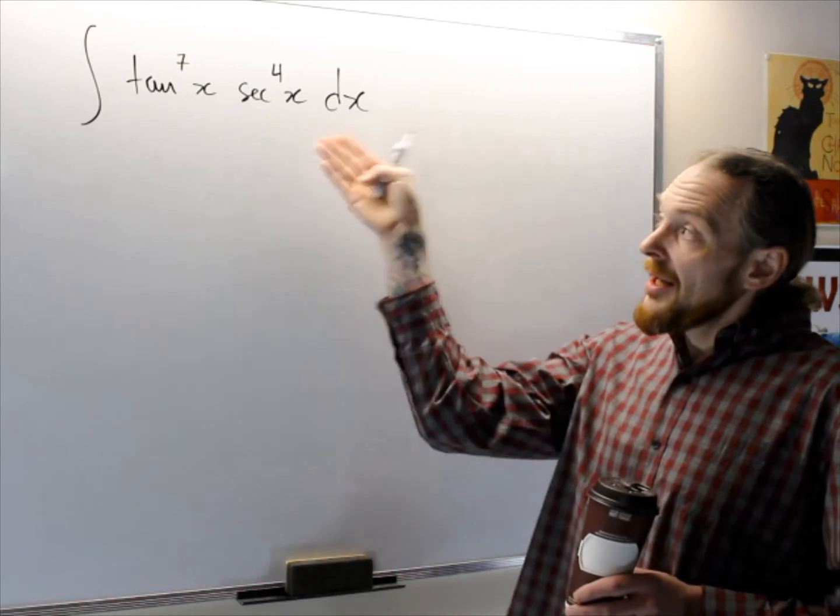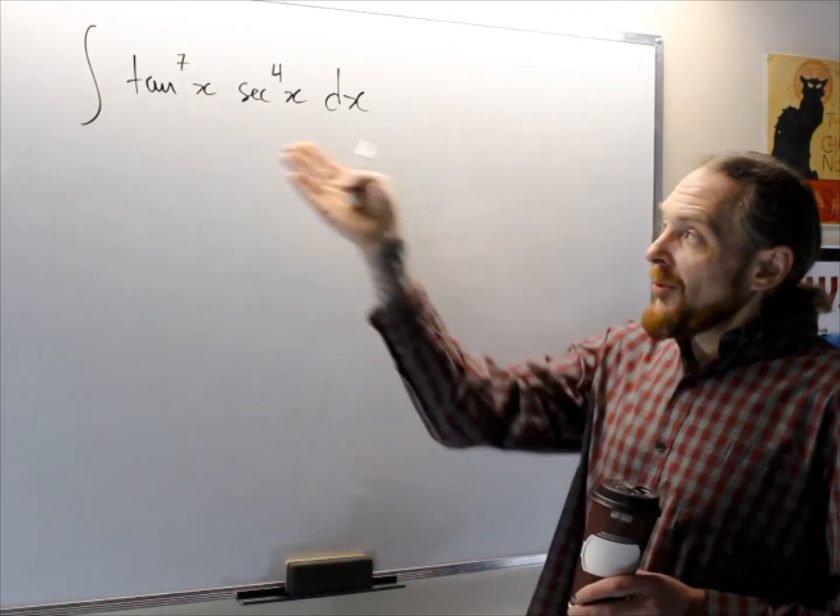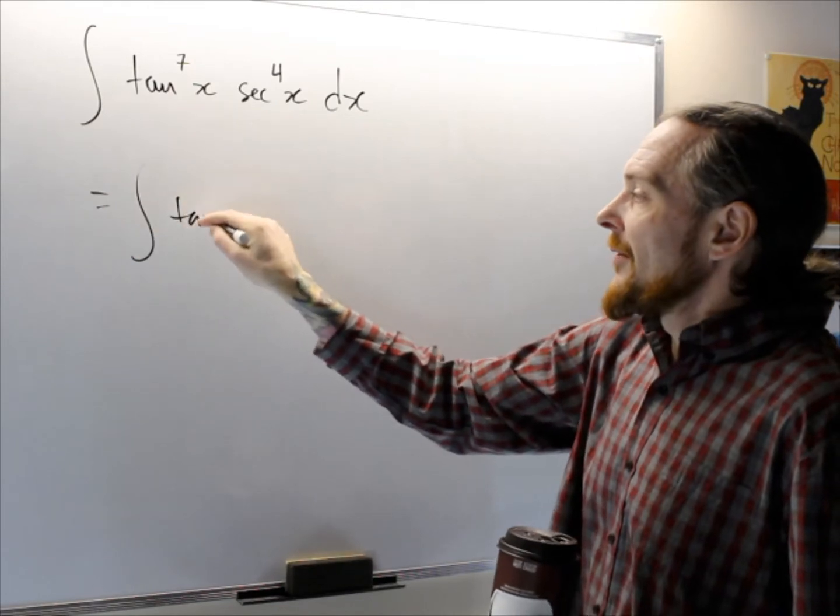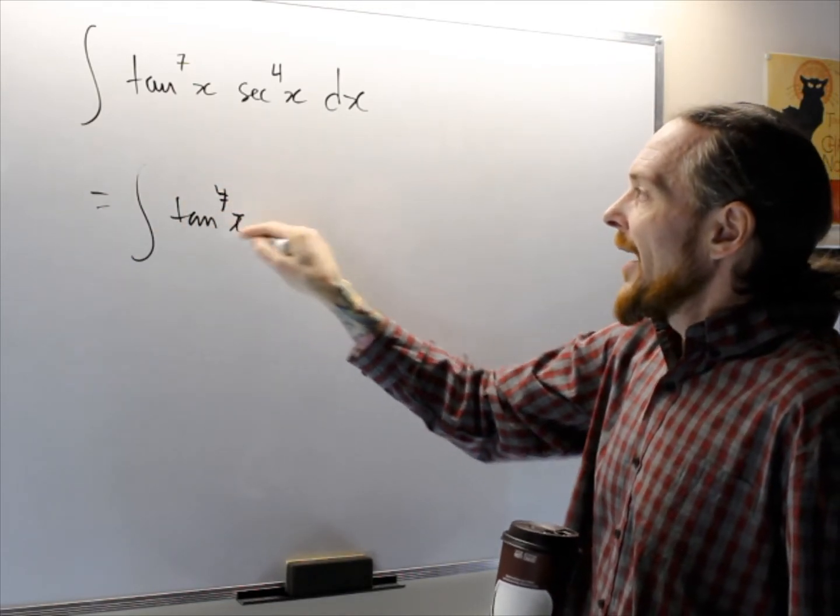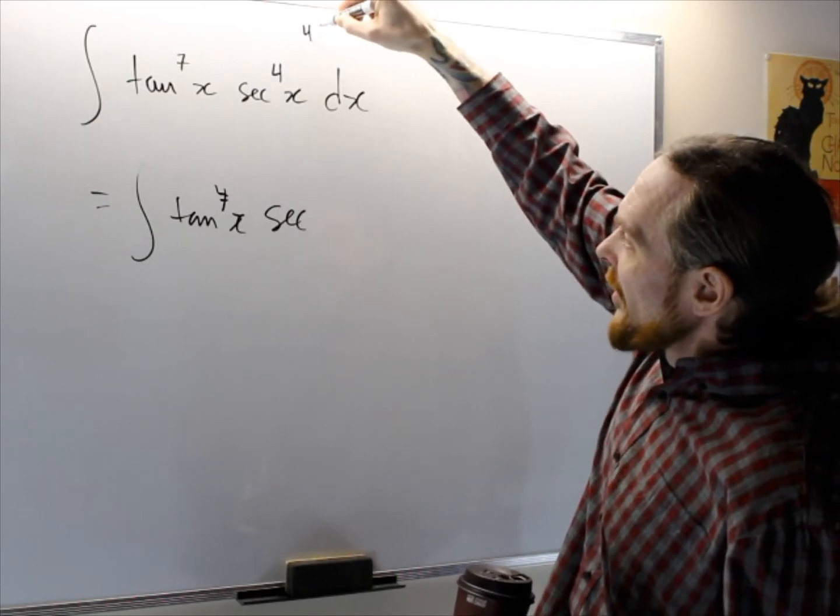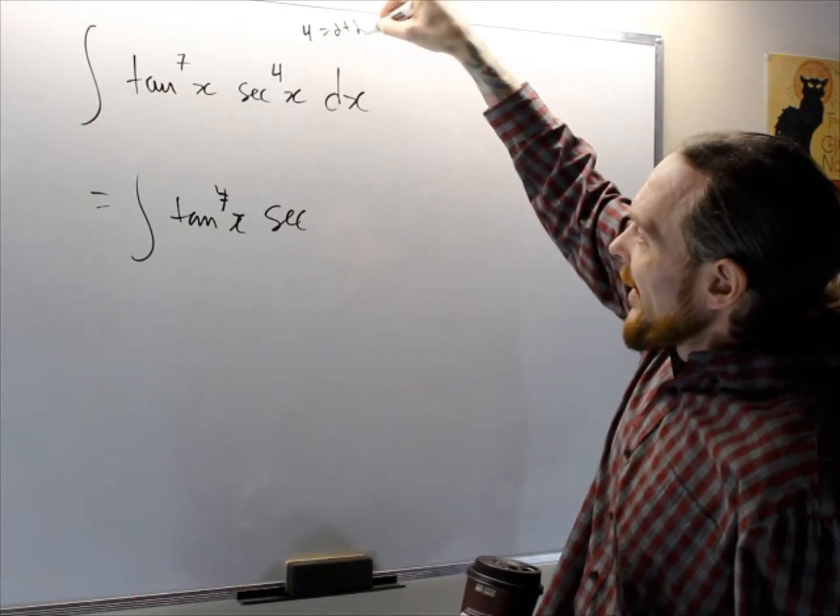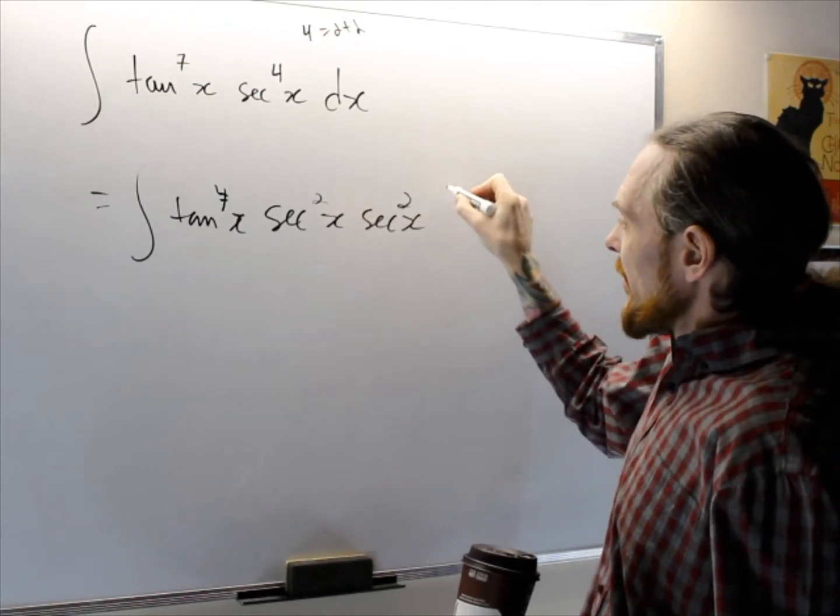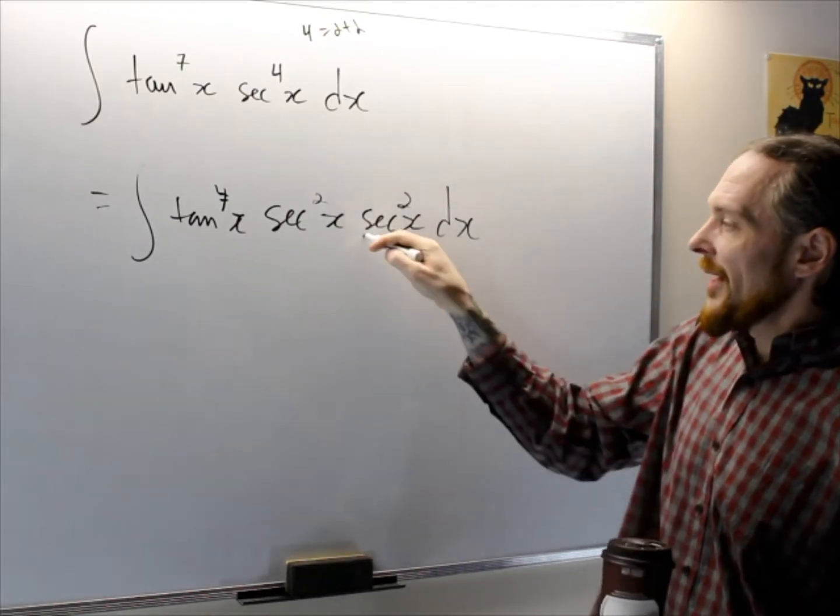I have even secant, so I'm immediately going to write it as the integral of tan to the seven x secant. What I'm really doing is making the four into two plus two and then stealing two using exponent laws, so secant squared x times secant squared dx.